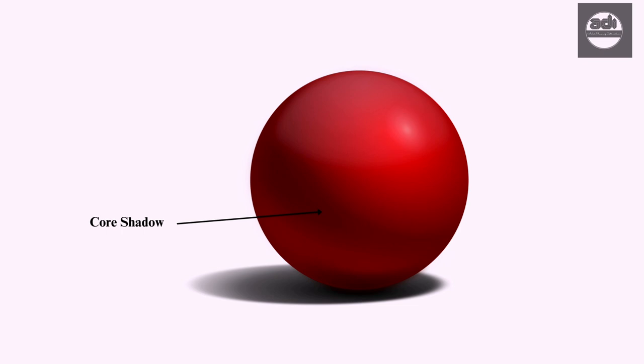Core shadow is the darkest part on the surface of the form of the subject you are drawing. It does not receive direct light or any reflected light. It appears as a dark band on the surface of the form depending on what subject matter you are drawing.